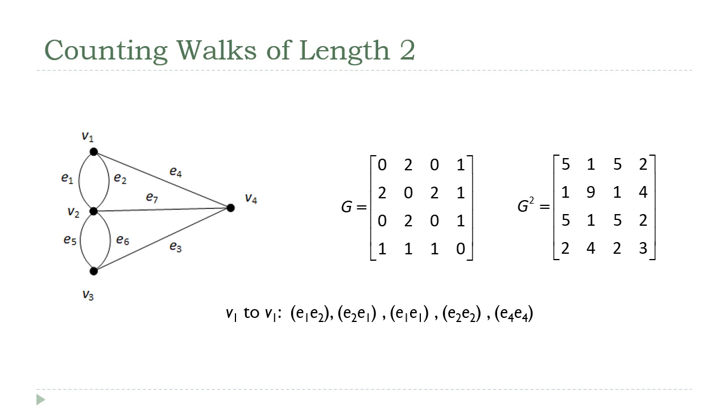Now, here's the cool part. We looked at these are the number of walks of length two between V1 and V1. Well, if you look at the 1,1 entry of G squared, it's equal to five. It's equal to that number of circuits.